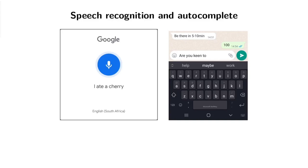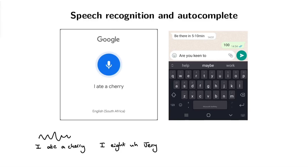Let's start with a little example. Say I'm talking to my phone using one of these Google apps and I say the words 'I ate a cherry.' Google correctly recognizes this from the speech signal. But how does Google know that I didn't say something else that is acoustically basically the same — something like 'I ate a jerry'? Let's say for the sake of argument that the acoustic signal between these two is exactly the same. How does Google know that it should output 'I ate a cherry'?